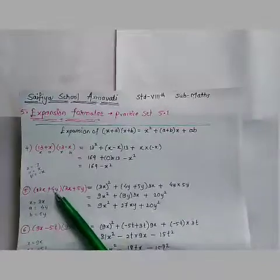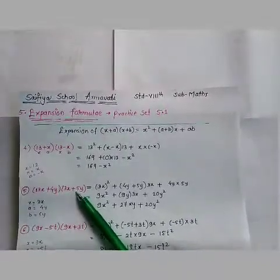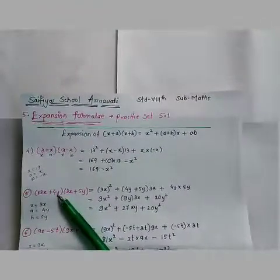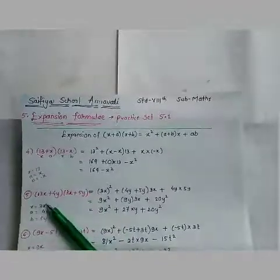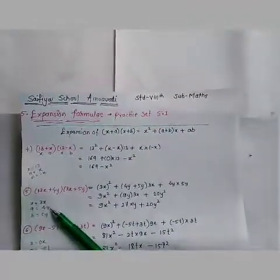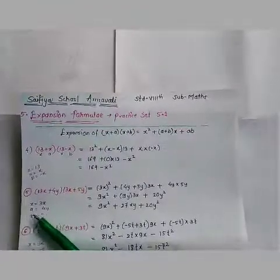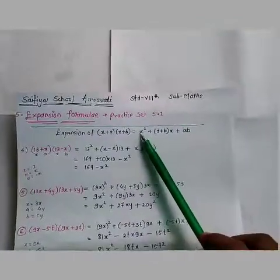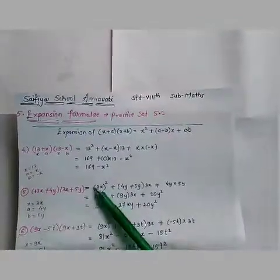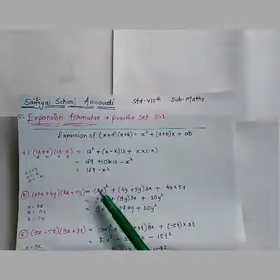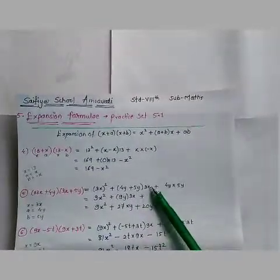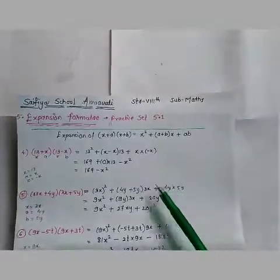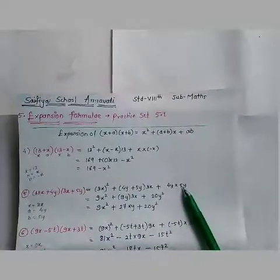5th question: (3x+4y)(3x+5y). Here x ki value hamein 3x di hui hai, aur a ki value hai 4y, aur b is 5y. I have written the values here by pencil. x is 3x, a is 4y, aur b is 5y. So directly hum x, a aur b ki values put karenge is formula mein: (3x)² + (4y+5y)(3x) + (4y)(5y).